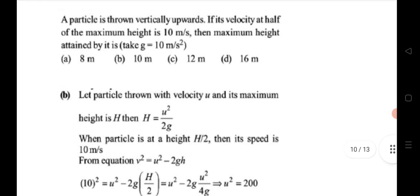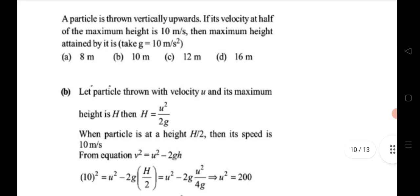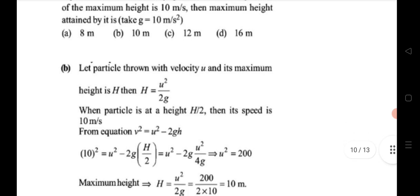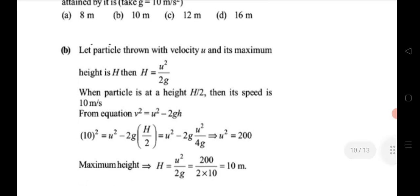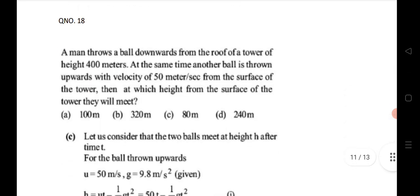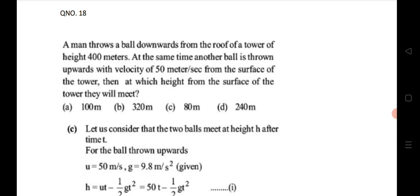Seventeenth question: a particle is thrown vertically upward. If its velocity at half the maximum height is 10 m/s, find the maximum height. The maximum height formula is h = u²/2g. When the particle is at height h/2 with speed 10 m/s, use v² − u² = 2gh to find the initial velocity, then substitute into the maximum height formula to get the answer.